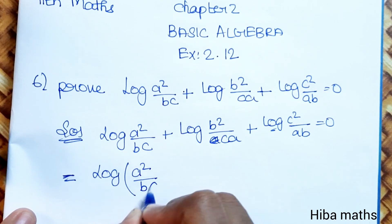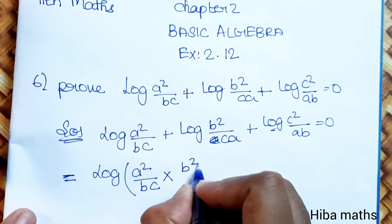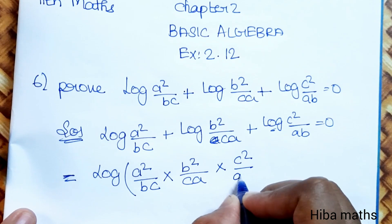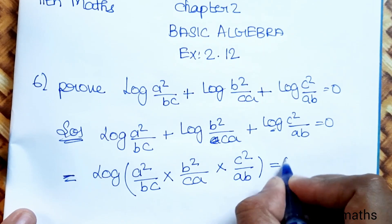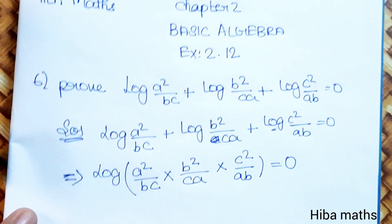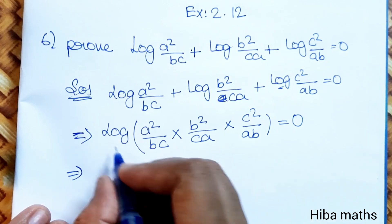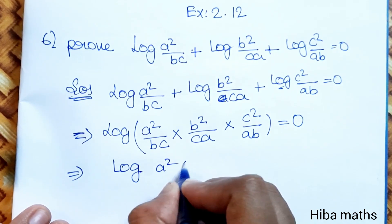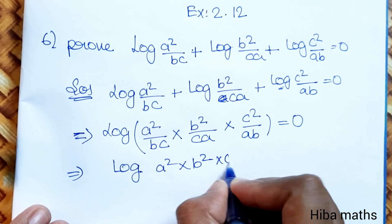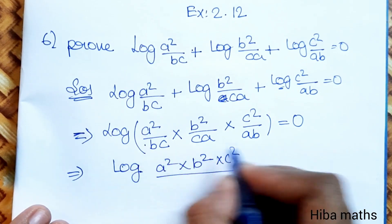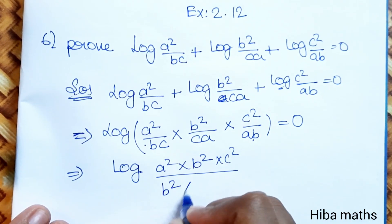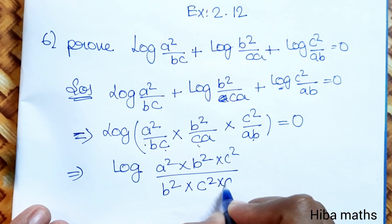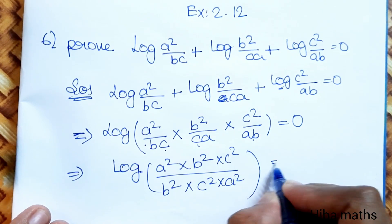Now, A² / BC multiplied by B² / CA multiplied by C² / AB. Expanding: log of (A² × B² × C²) divided by (B²C² × A²), which is equal to 0. Numerator: A² × B² × C²; denominator: B² × C² × A².